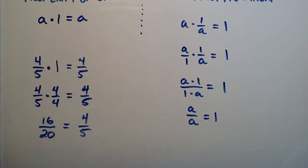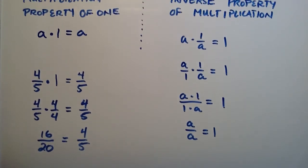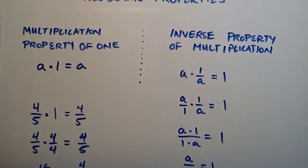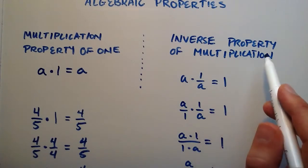So anyway, that's basically what those two properties are in a nutshell. And one other point that I should probably make about this is that when we're using the inverse property of multiplication,